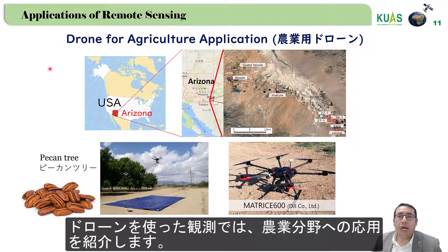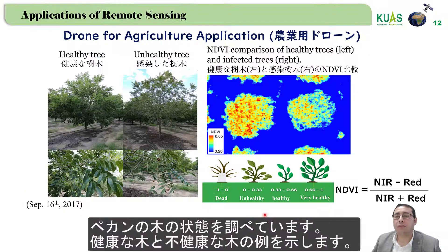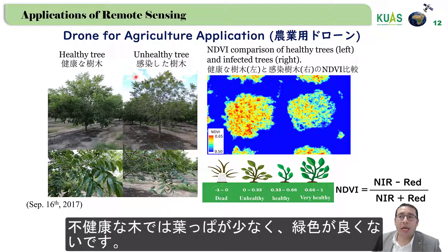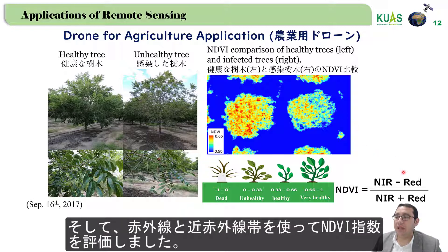For drones, I will show the usage of drone for an agriculture application. In our project in Arizona, USA, we have several orchards, and we need to check the pecan trees using the DJI Matrice 600 drone. A healthy tree has more leaves and more color, while an unhealthy tree has fewer leaves and less green color. We fly the drone several times, collecting data and then using the red and near-infrared bands to estimate the NDVI index.